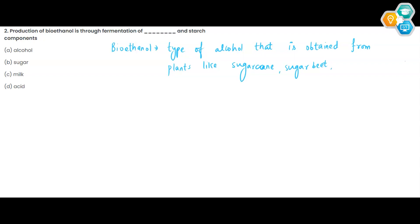And some grains like corn. Those plants which are high in cellulose content really produce bioethanol. Aise plants jo ki jin ke paas cellulose content high hota hai, to plant ke through bioethanol produce hota hai.